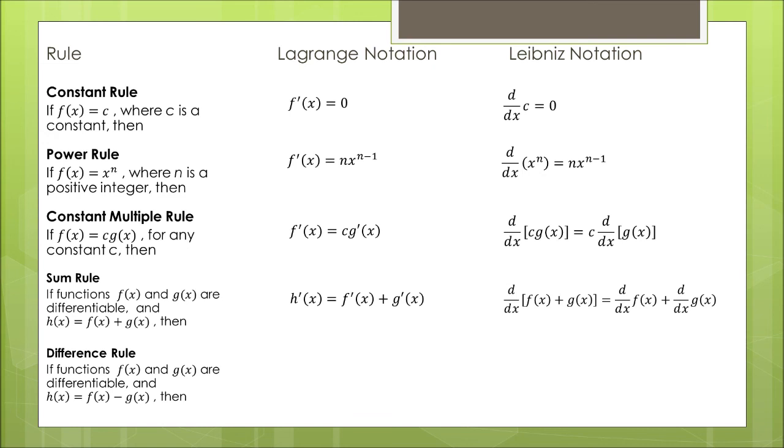The same way we have the difference rule, which is nothing else than the same rule as before but with a negative sign. So for a function h of x which is a difference of two differentiable functions f of x and g of x, the derivative is going to be the difference of the derivatives of those two functions.